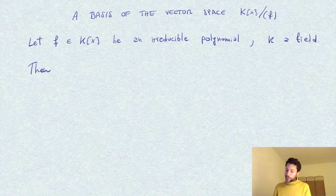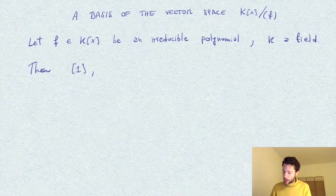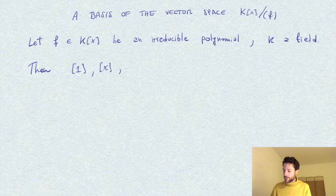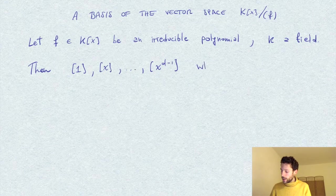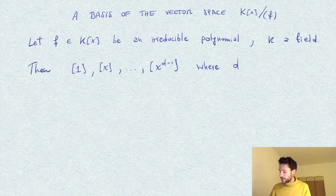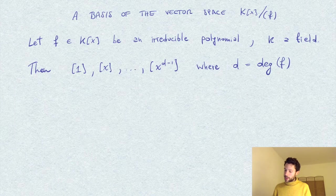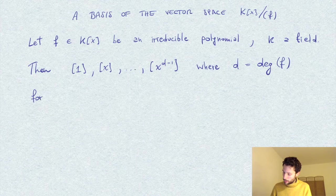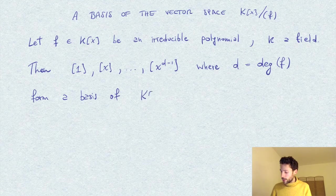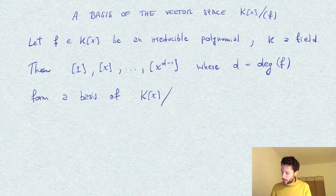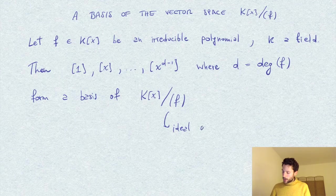The most obvious basis we can pick in the quotient are the classes of the monomials 1, x, and all the powers of x until x^(d-1), where d is the degree of f. These d elements form a basis of the quotient k[x]/(f), where (f) is the ideal generated by f.